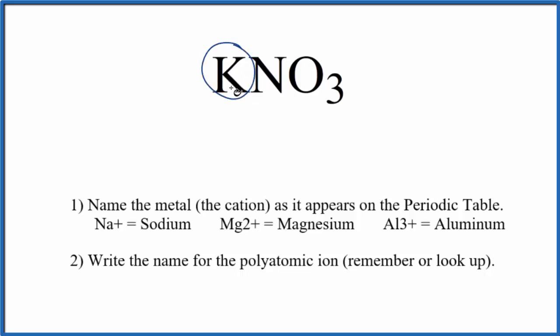Then we have it bonded to K, potassium. That's a metal. So we're going to first write the name for K, potassium. And then we're going to write the name for this polyatomic ion, the nitrate ion.